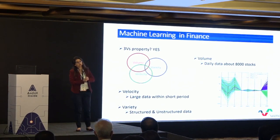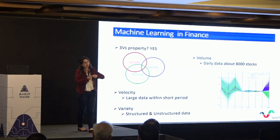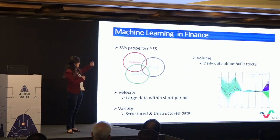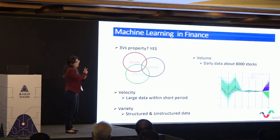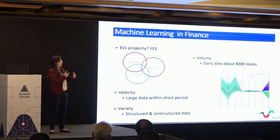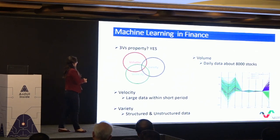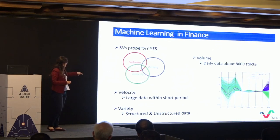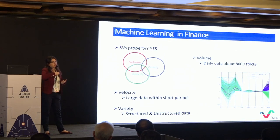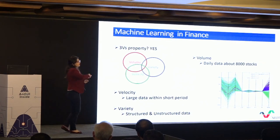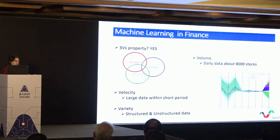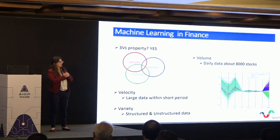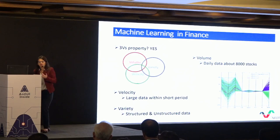We also have the 3V problems — the problem of big data. Since we work with the US market, every day we have data about 1,000 stocks, including news, prices, technical indicators, and financial reports — a lot of data. The second V is velocity: the speed of data generation is very high — sometimes every minute we receive news about data that we must process. And finally, variety: we have structured and unstructured data. One of our data providers is Quandl, and we have many problems with them — sometimes we find the same stock with two different prices, for example.